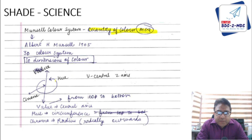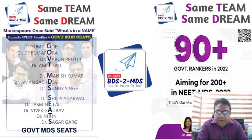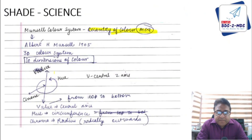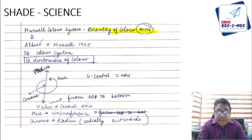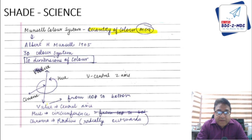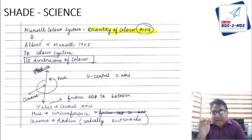Value is on the central z-axis, hue surrounds it in the form of a circumference, and chroma is the radius. Value goes from 0 to 10: 0 is the bottom, which is black, and 10 is white, the highest value.